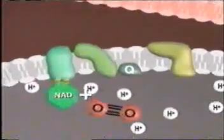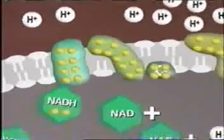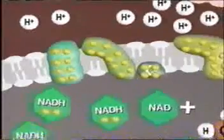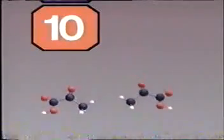El papel fundamental del oxígeno es quitar los electrones del extremo de la cadena. Pero sin oxígeno, la cadena no sigue. El NADH no se utiliza y el NAD+ no puede reciclarse. La glucólisis necesita un suministro constante de NAD+ para continuar produciendo ATP. A pesar de que el oxígeno no está presente, la respiración celular puede recurrir a otras estrategias.